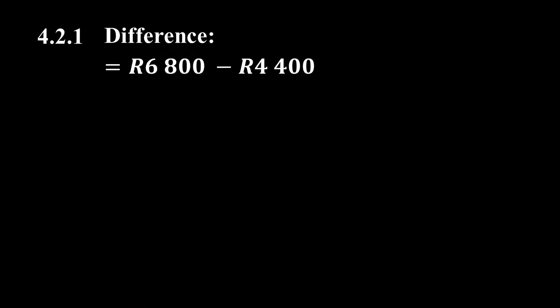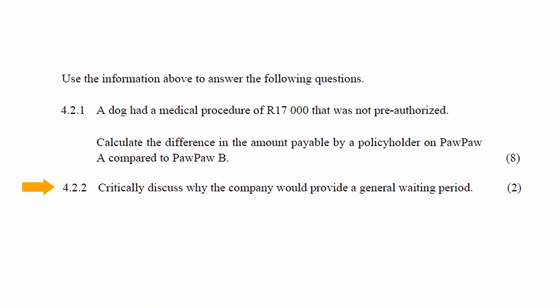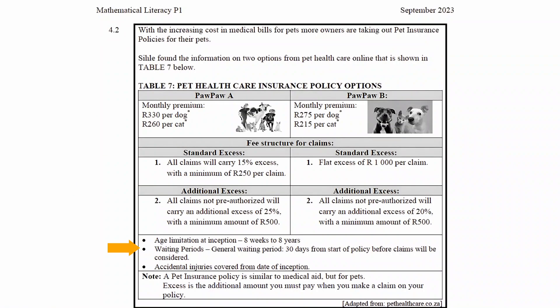Now we calculate the difference in the amount payable by the policyholder between the two options. The difference is 6,800 rand minus 4,400 rand, which equals 2,400 rand. In question 4.2.2, you have to critically discuss why the company would provide a general waiting period. A company provides a general waiting period to ensure that animals with pre-existing conditions do not claim within the first 30 days.